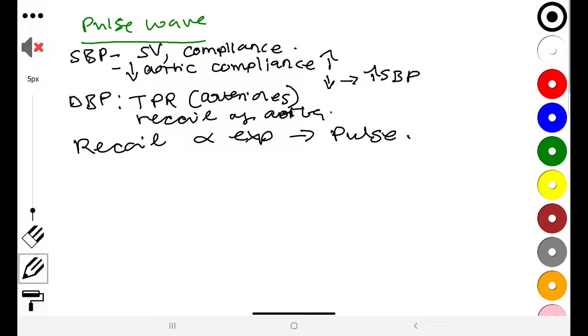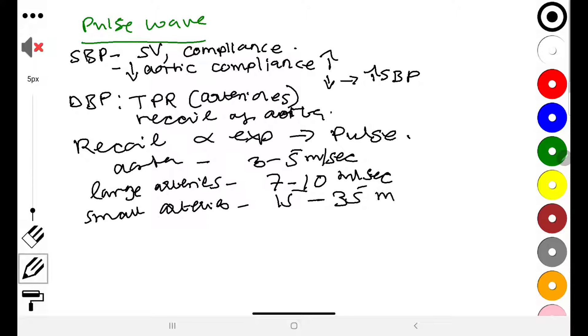The velocity of pressure pulse in the vascular system is very much dependent on the compliance. So again you see that the greater the compliance, lower the velocity. And hence you see that velocity is slow in the aorta and much much faster in less compliant small distal arteries. So in the aorta you see that velocity is between three to five meters per second, then in large arteries it's about seven to ten, then in the small muscular arteries which are less compliant you find between 15 and 35 meters per second.